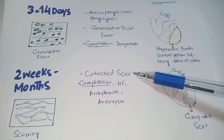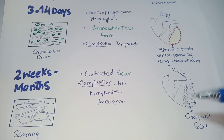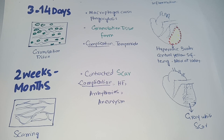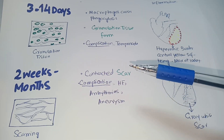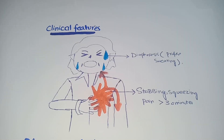After 2 weeks to months, scar formation results, and the scar gives a grey-white appearance to the infarcted area. In summary: during the first 24 hours, early coagulative necrosis and early neutrophils appear, best appreciated through tetrazolium stain — intact area stains dark red, infarcted area stains pale. At 1–3 days, acute inflammation makes the heart appear red. At 3–14 days, granulation tissue forms, giving a yellow soft appearance. At 2–14 weeks, scar formation gives a grey-white appearance.